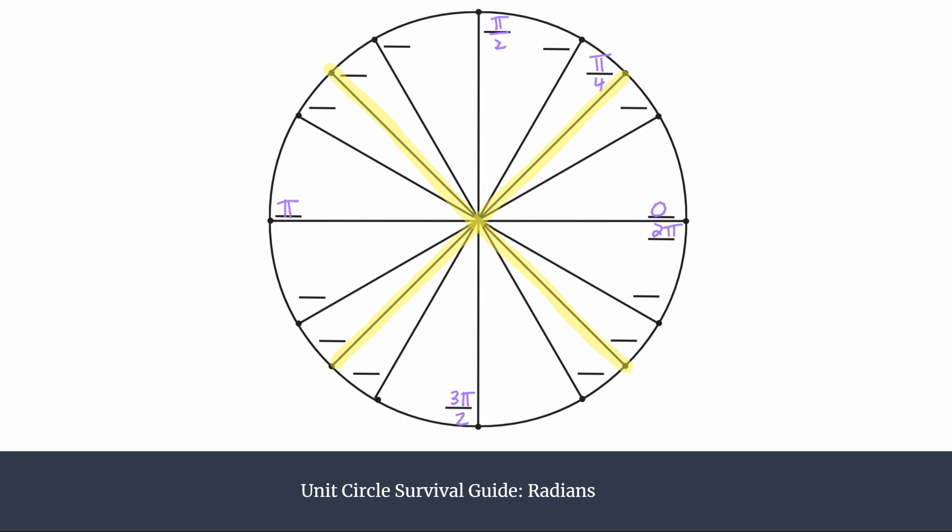And remember, reference angle just means how much rotation to get back to the x-axis. So we label 1 pi over 4, 2 pi over 4 reduces to pi over 2, we already have that labeled, 3 pi over 4, 4 pi over 4 is already labeled, it reduces to 3 pi over 2, and then 7 pi over 4. And of course, 8 pi over 4 is 2 pi.